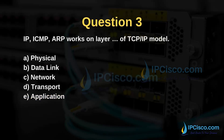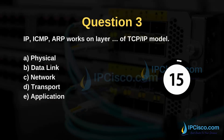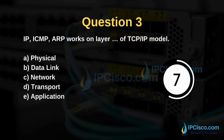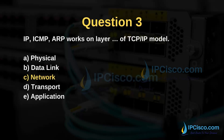Question 3: IP, ICMP, and ARP work on which layer of the TCP/IP model? The options are physical, data link, network, transport, or application. The answer is the internet (network) layer.